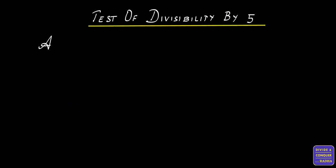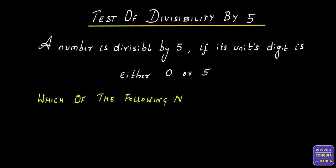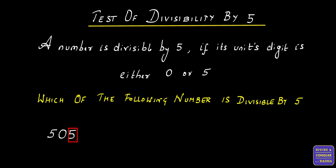Test of Divisibility by 5. The rule states that a number is divisible by 5 if its unit's digit is either 0 or 5. Now let's check which of the following numbers is divisible by 5. The first number that we have is 505. The number in the unit's digit is 5, which satisfies the above rule. Therefore, 505 is divisible by 5.